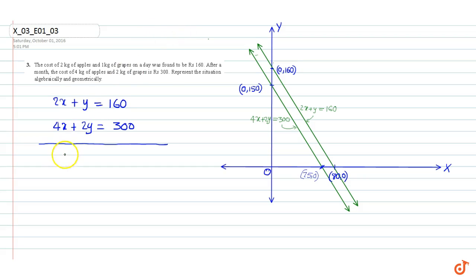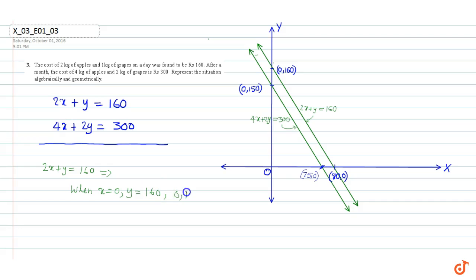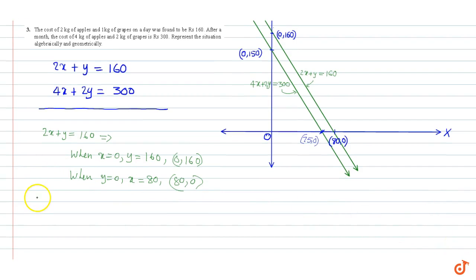To find the geometric representation, let us find two points. For 2x plus y equal to 160: when x is equal to 0, y is equal to 160, so (0, 160) is one point. When y is equal to 0, x is equal to 80, so (80, 0) is one point. We draw a line between these two points and we get the line 2x plus y equal to 160.